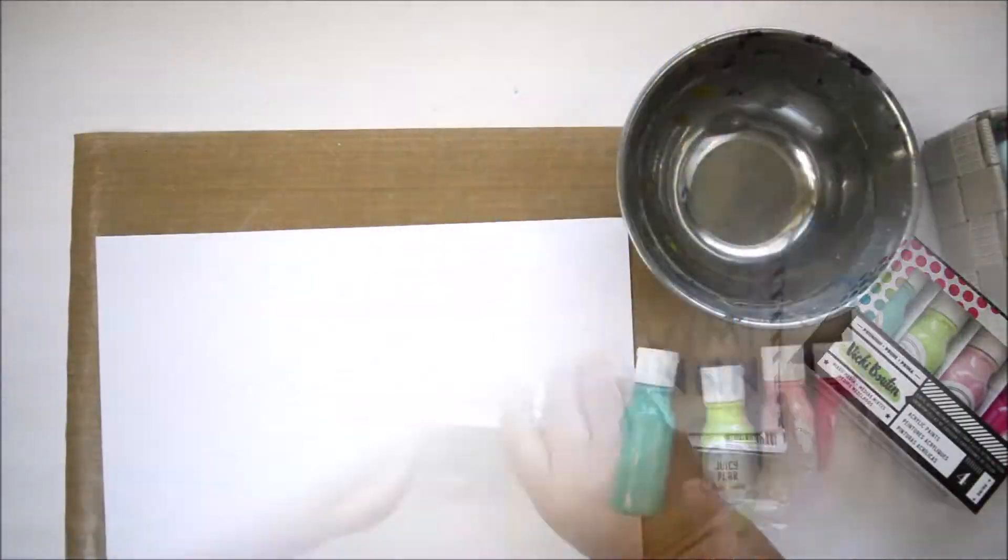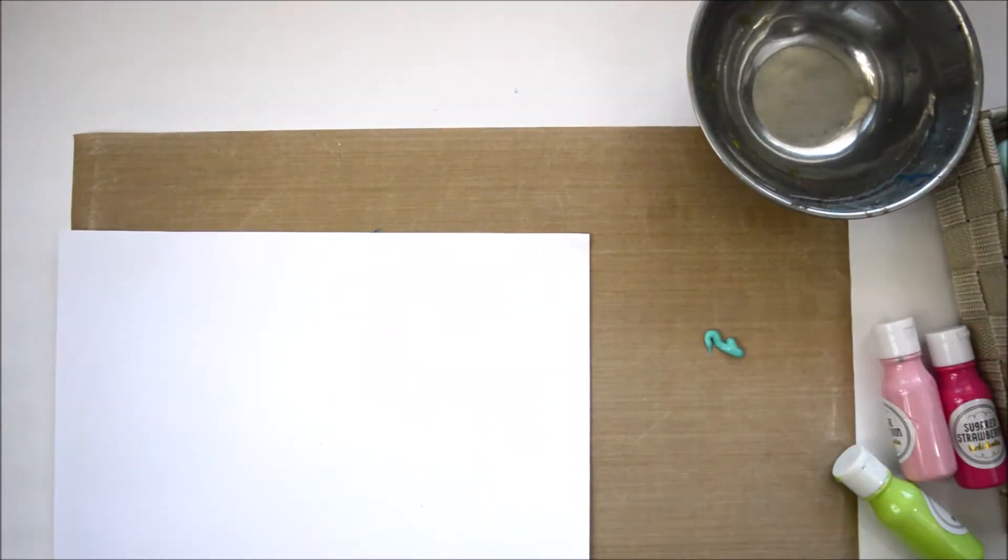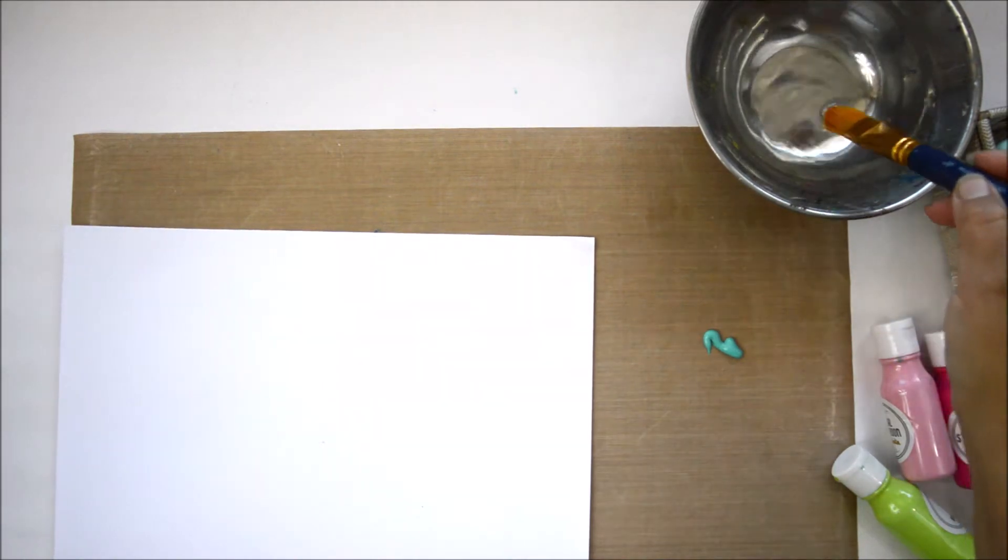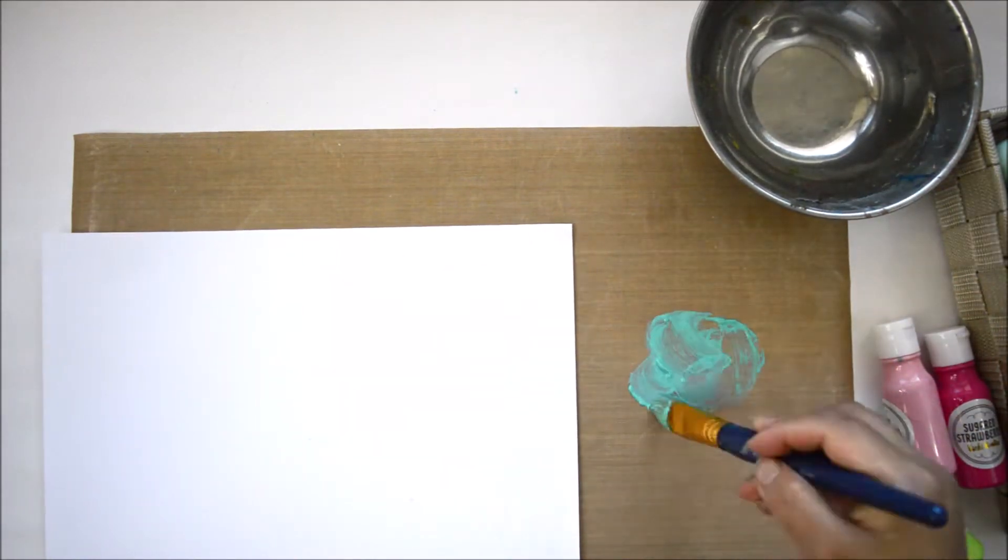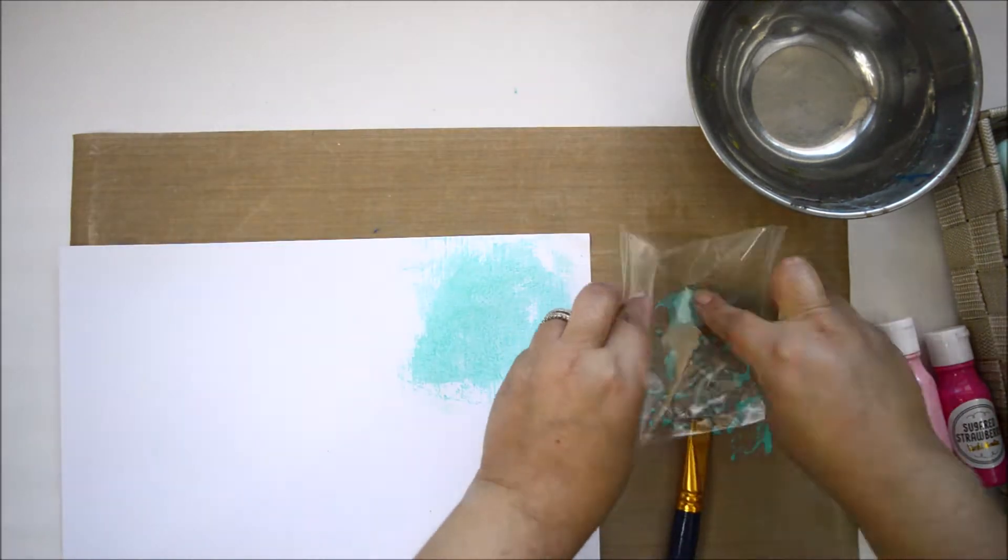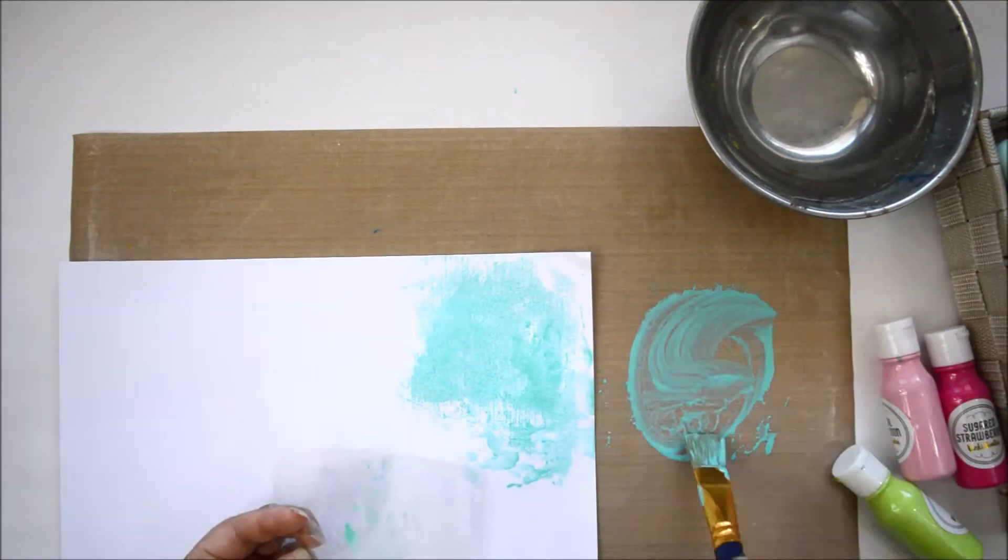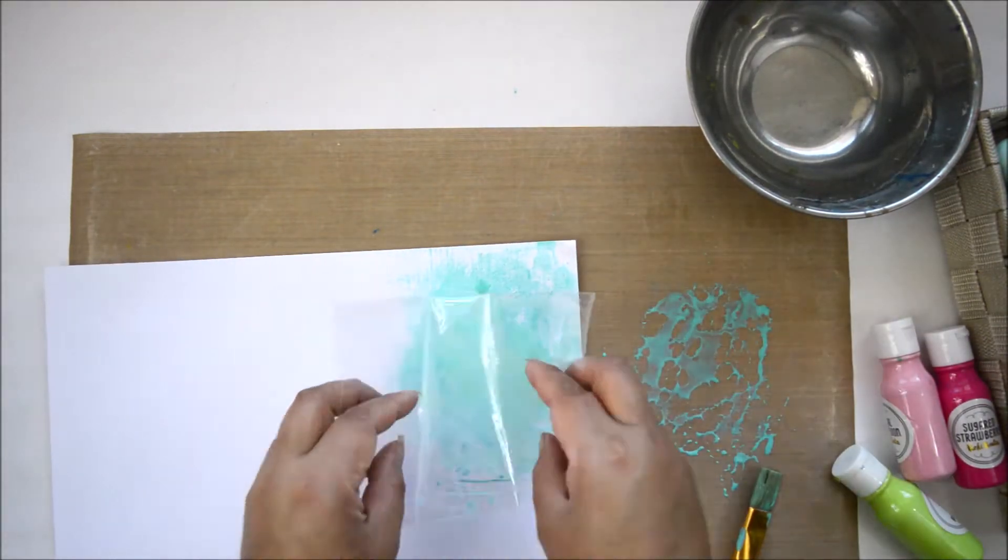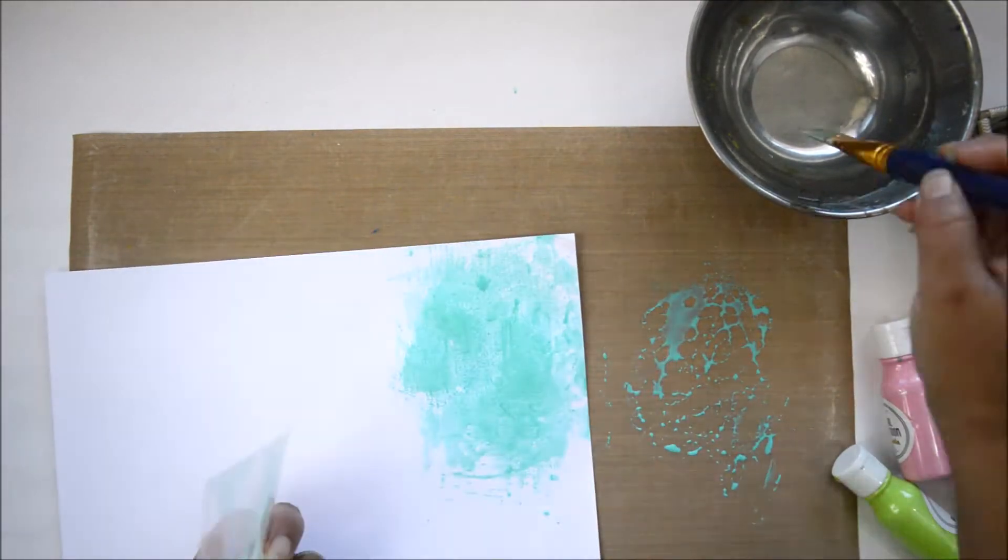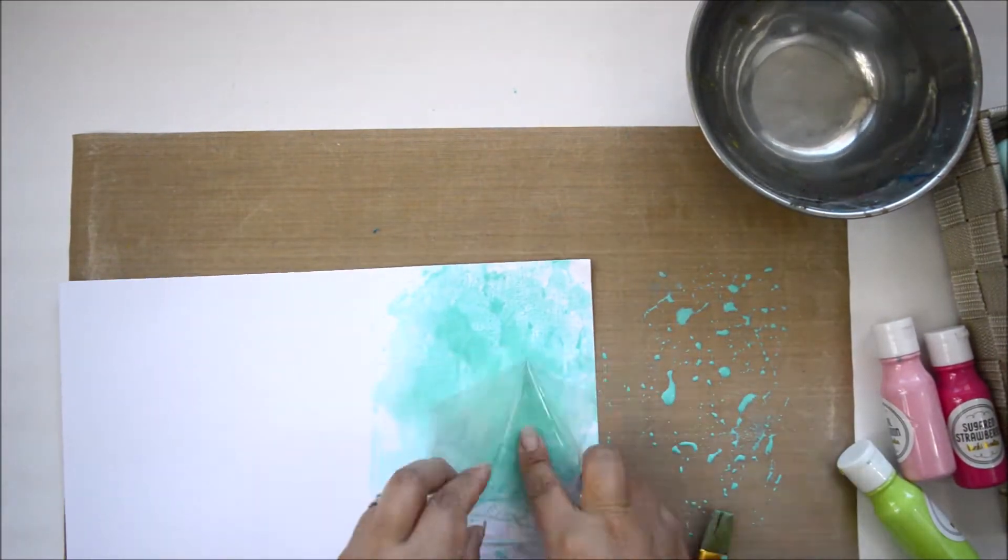For this layout I'm going to use the July mixed media kit which has four of the Vicki Boutin Pop Paint acrylic paints. These are really highly pigmented paints so a little bit's gonna go a long way. Actually I'm gonna use the autumn kit this time around because I wanted to play with the colors that are included in the mixed media kit that match to a tee the colors on the papers in the autumn kit.